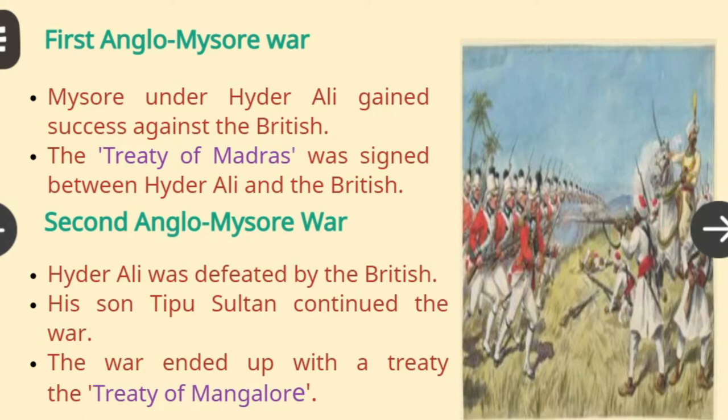The First Anglo-Mysore War: In this war, Mysore under Hyder Ali gained success against the British. The Treaty of Madras was signed between Hyder Ali and the British. The Second Anglo-Mysore War: Hyder Ali was defeated in this war. His son Tipu Sultan continued the war. The war ended with the signing of the Treaty of Mangalore.